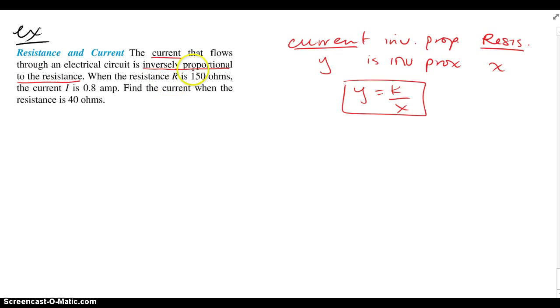So let's make sure we have our variables in order. When the resistance R is 150 ohms, the current I is 0.8 amps. Those are our variables. And again, I'm using this idea that the current is inversely proportional to the resistance. So the equation must be current is inversely proportional to the resistance, I equals k over R.